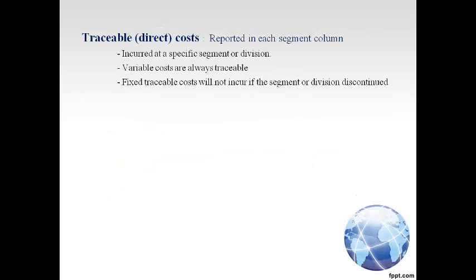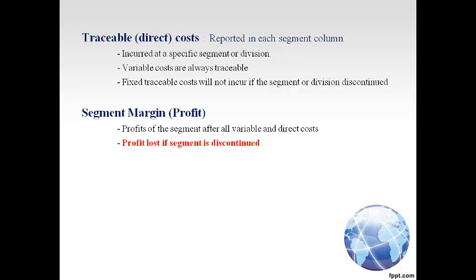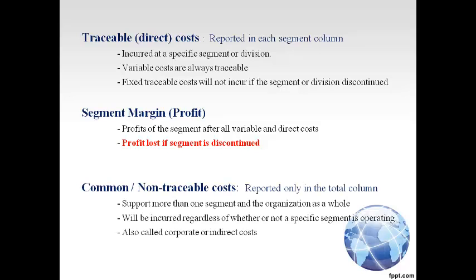Let's talk about the definition of costs on a segment income statement. Traceable costs are incurred at a specific segment or division only. Variable costs are always traceable and direct to the segment because they occur when sales occur. Fixed costs are traceable and direct if they will not occur if the segment is discontinued. The segment margin is the primary measure of profitability for the segment — it is the amount that total company profits will be lower if the segment is discontinued. Common or non-traceable costs are reported in the total column only, as they support all segments and are assumed to occur until the entire company stops operating. Discontinuing a specific segment will not eliminate these costs.